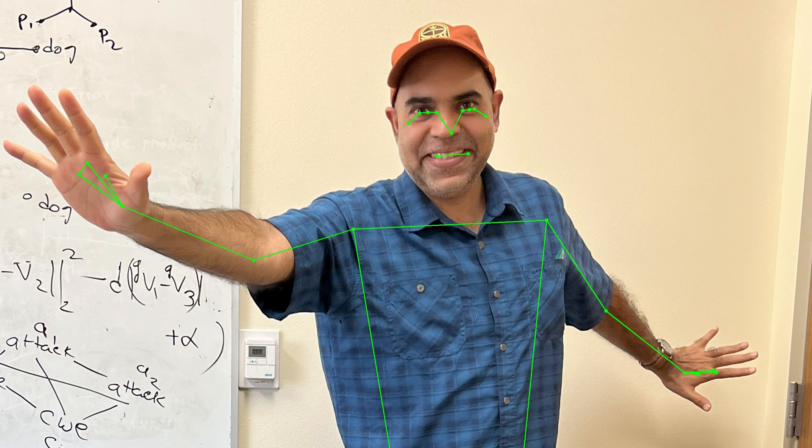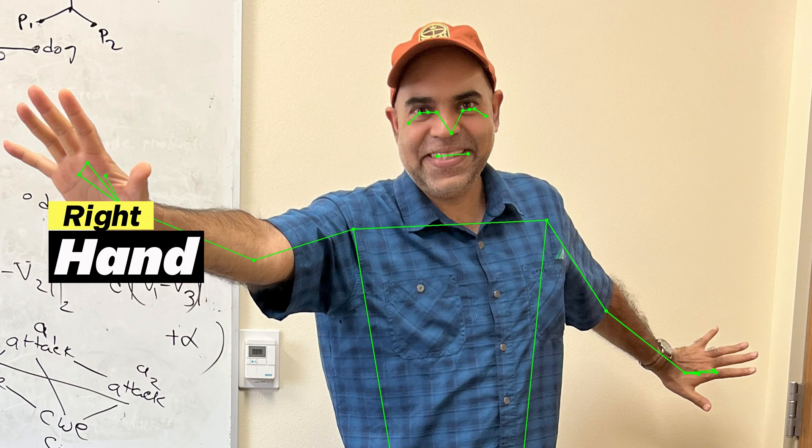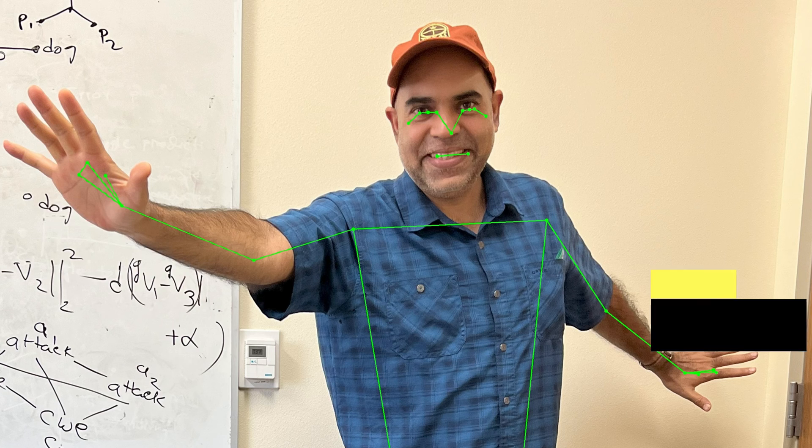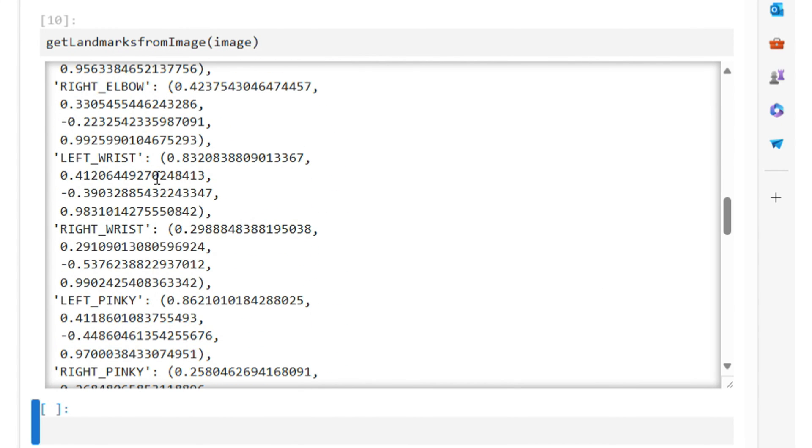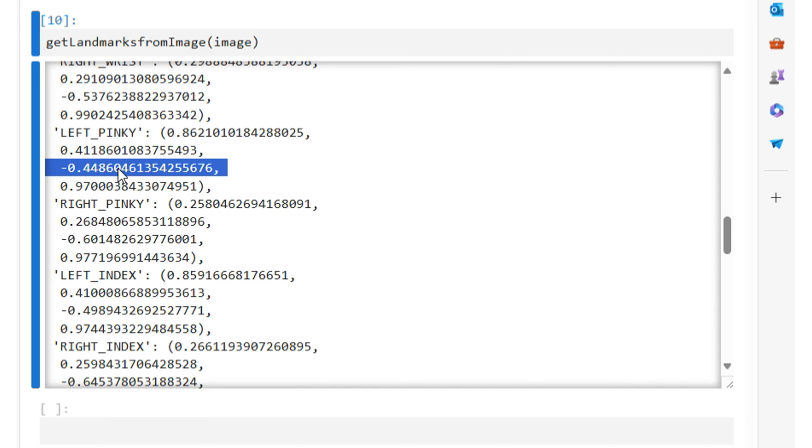Therefore, the z values of the landmark points in my right hand should be smaller than the z values of the landmark points in my left hand. That is evident in the z values of the relevant landmarks. The left wrist has a larger z value and the right wrist has a smaller z value. My left pinky has a larger z value and the right pinky has a smaller z value.